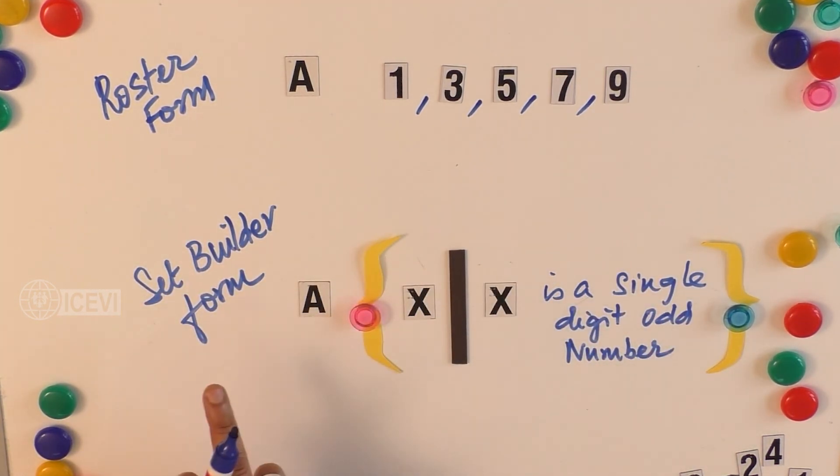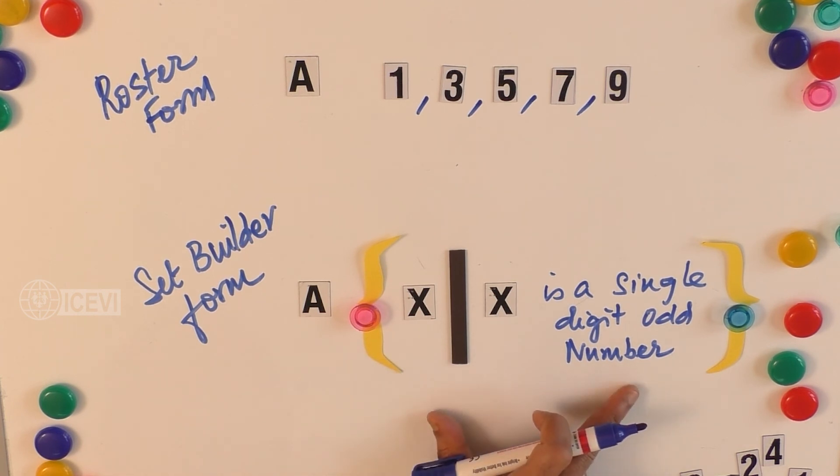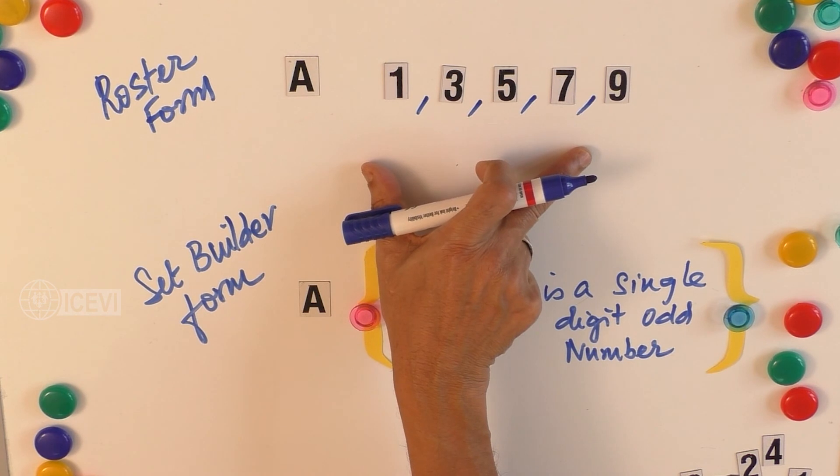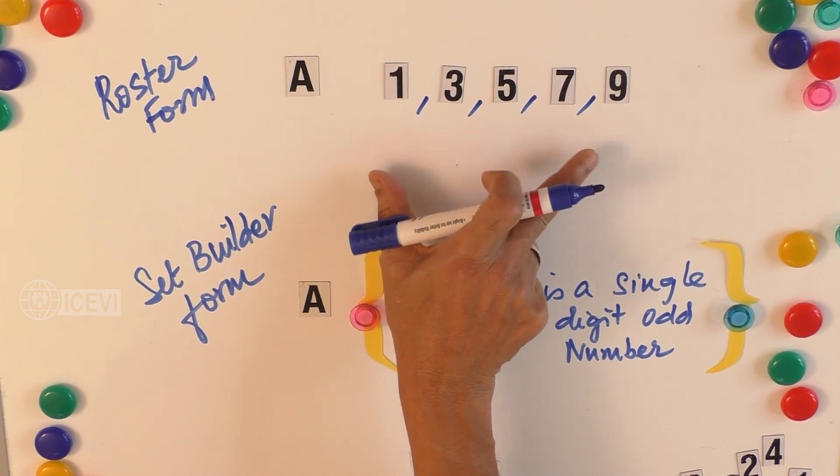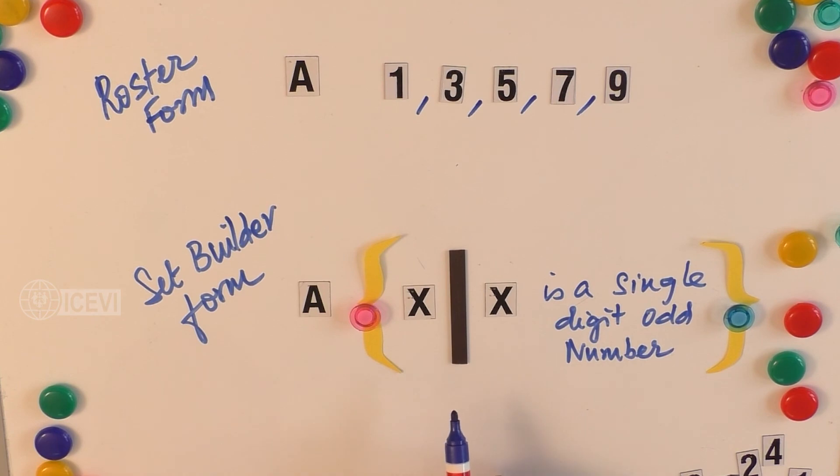The child will be able to understand the difference between these two. In higher level mathematics, we generally see the sets presented in the set builder form, whereas in the lower level classes, it is usually presented in the roster form.